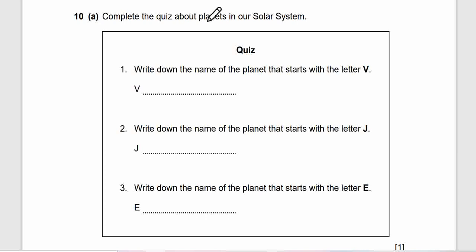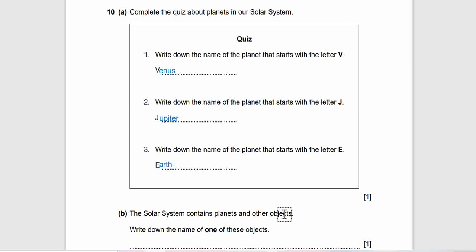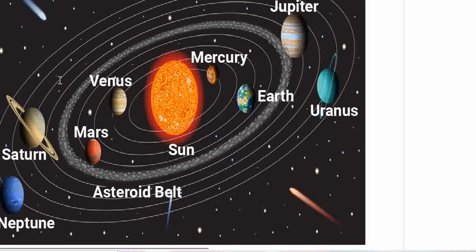Question 10. Complete a quiz about planets in our solar system. Write down the name of the planet that starts with letter V, the planet that starts with letter J and the other one with letter E. Get your correct answer. This is the answer. This is Venus, Jupiter, Earth. Question B. The solar system contains planets and other objects. Write down the name of one of these objects. Besides planets, what is one of these objects? Now here is the answer. So one of the possible answer is asteroid. This is an asteroid belt here. So this is one of the objects besides planets and the sun and the other stars.